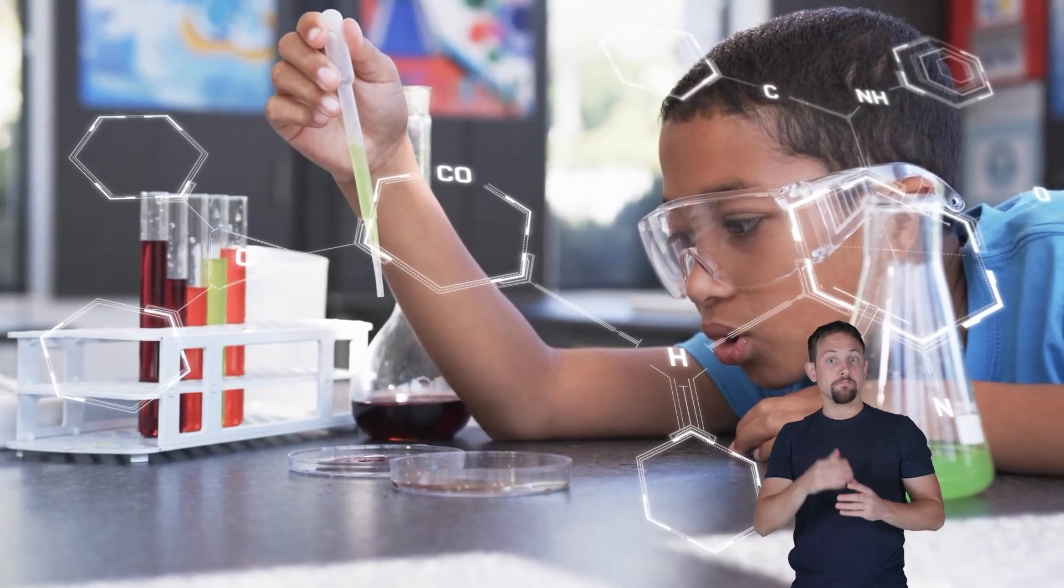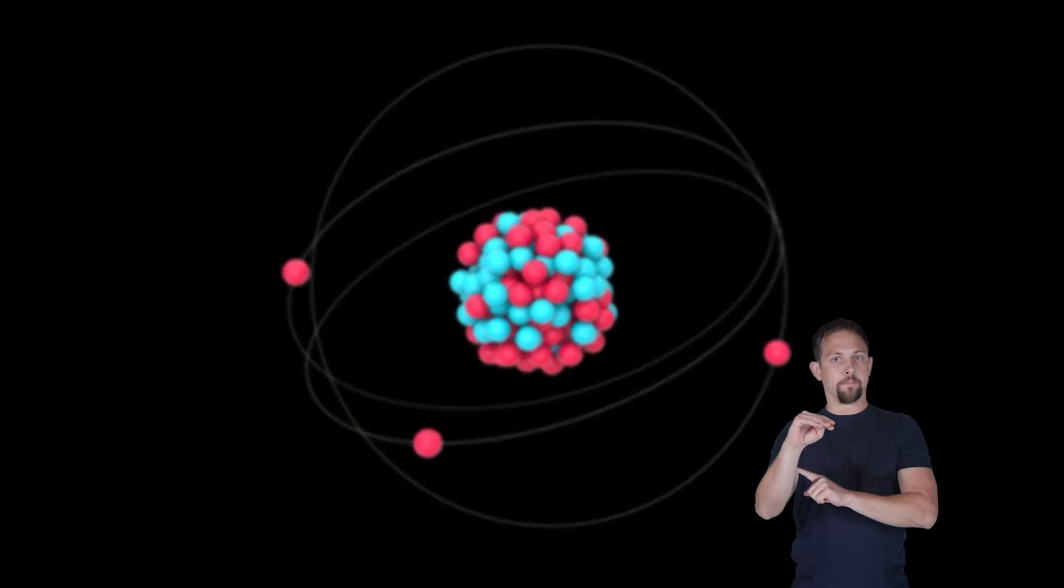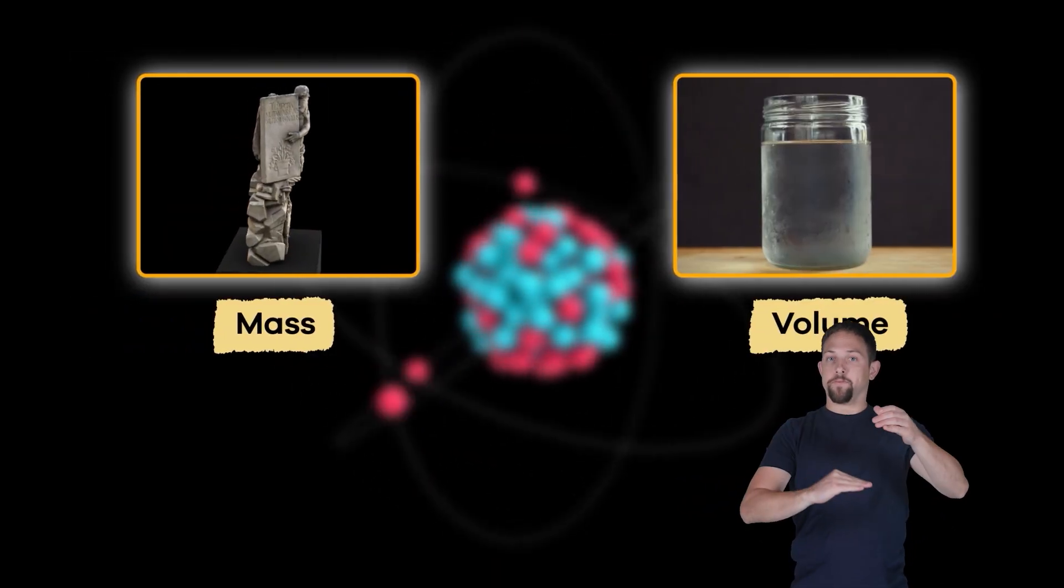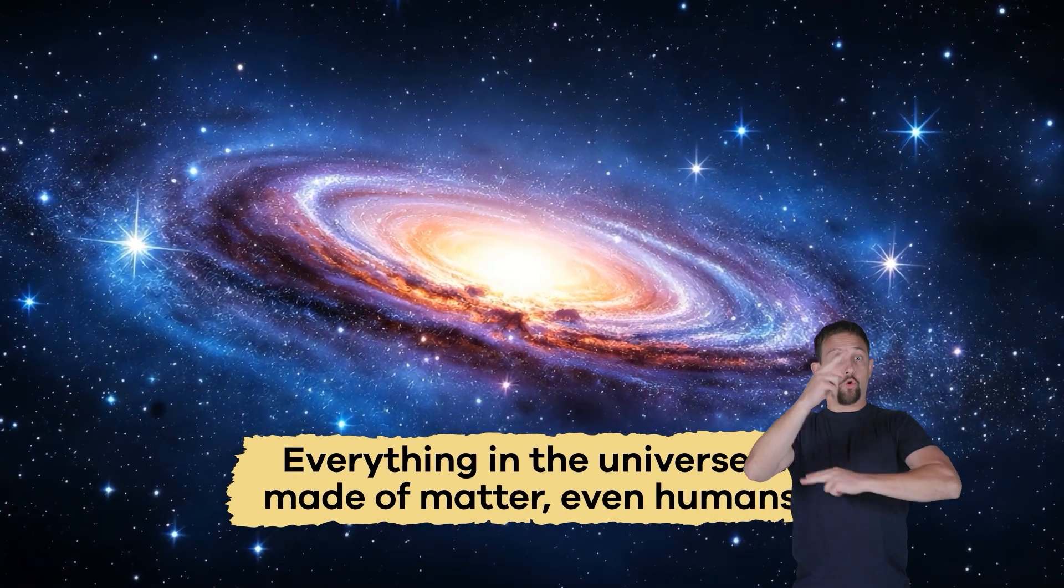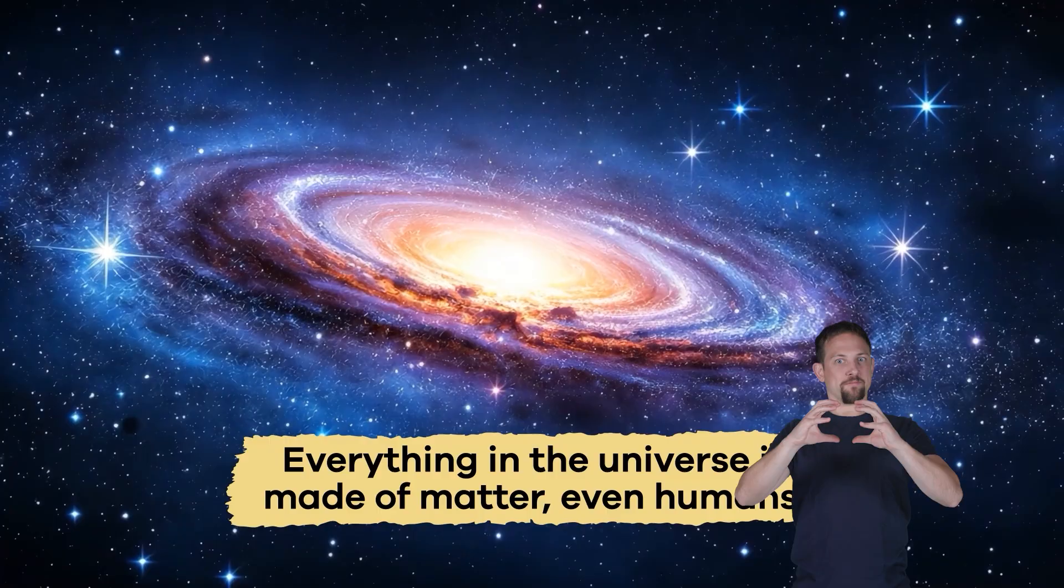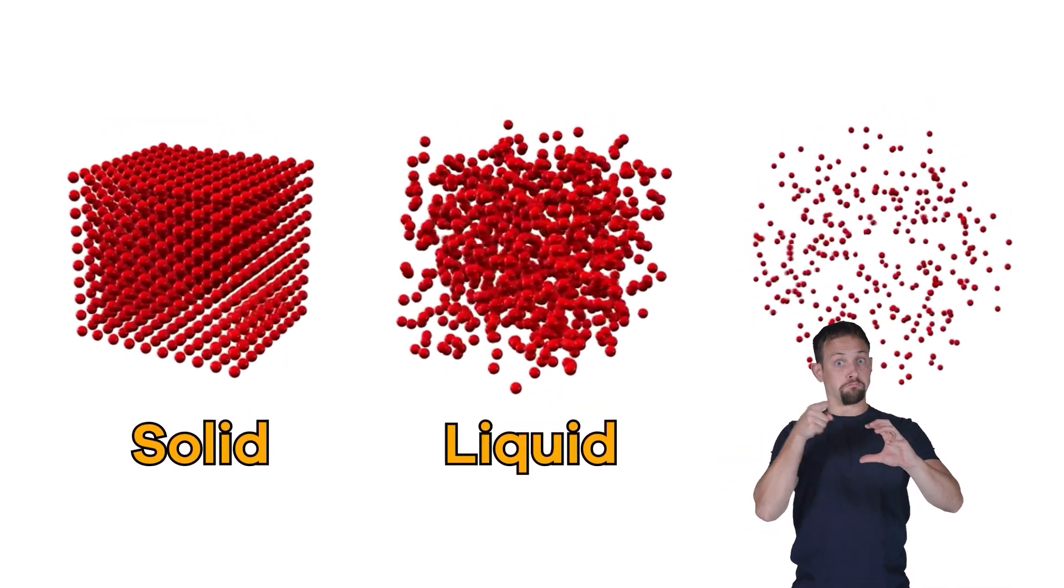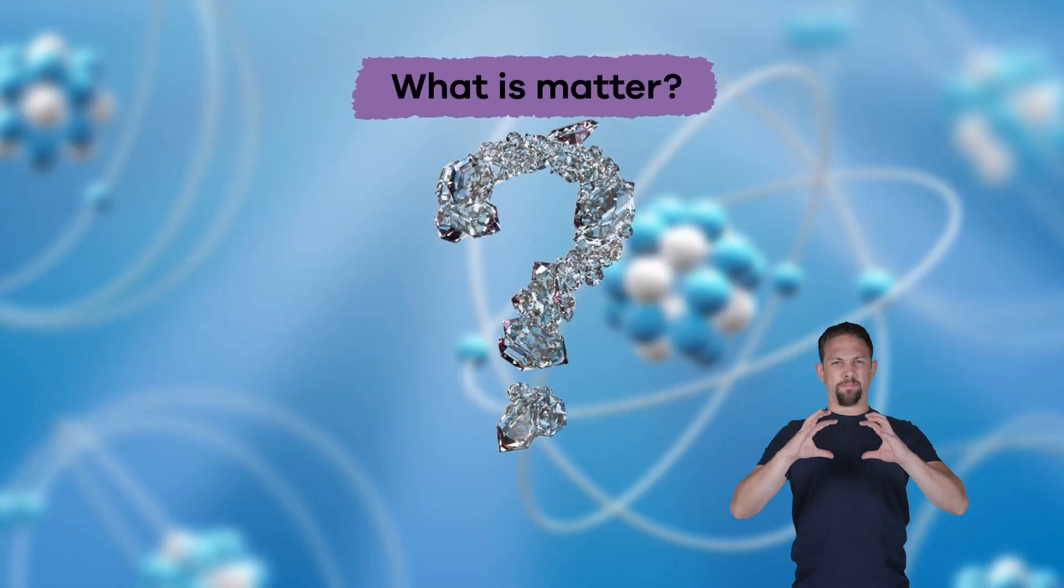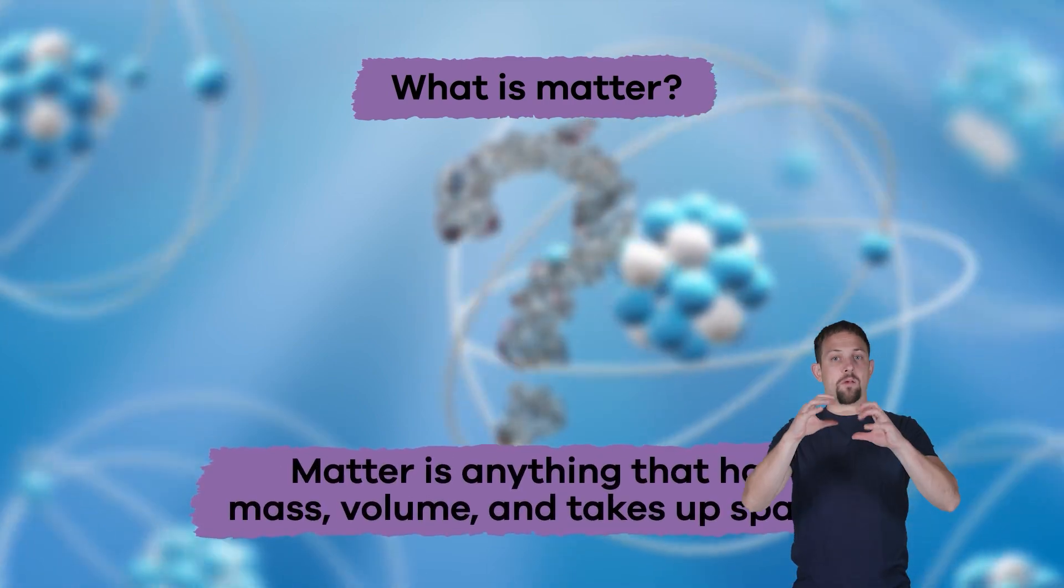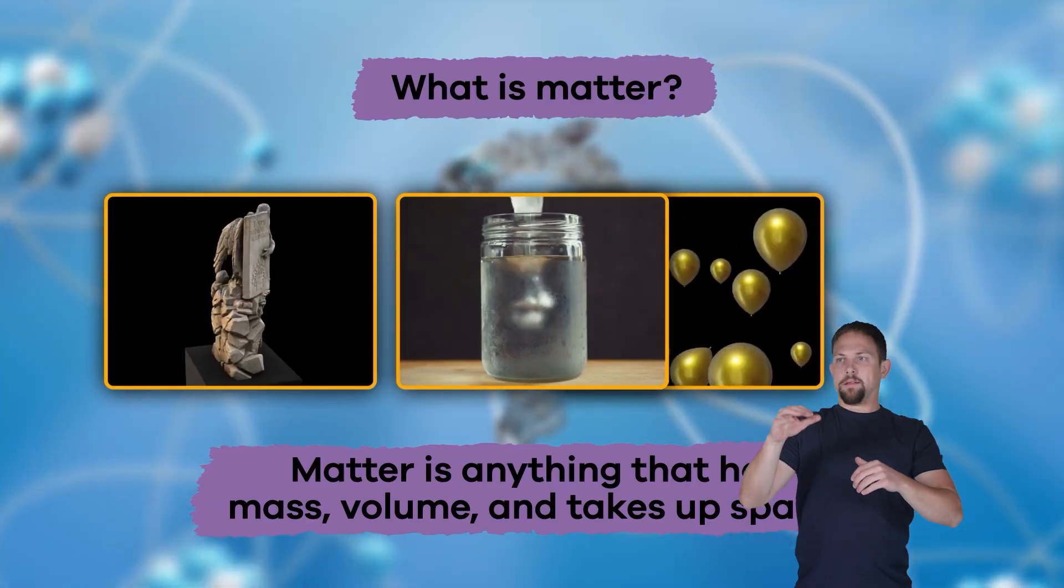Let's get started with some basics. Matter is anything that has mass, volume, and takes up space. Everything in the universe is made of matter, even humans. When we talk about the states of matter, we mean the different forms in which matter can exist.